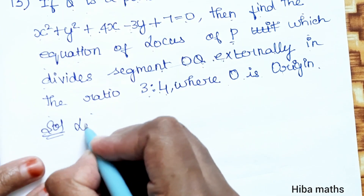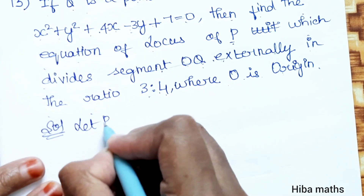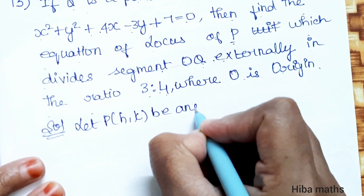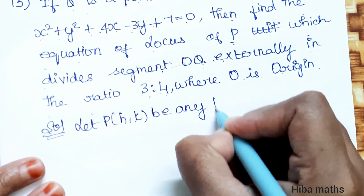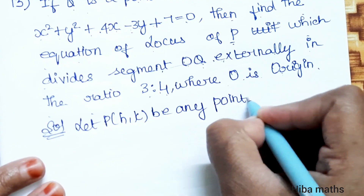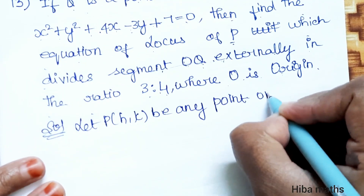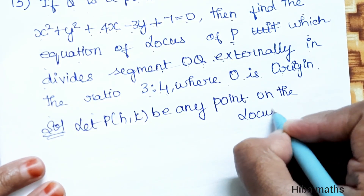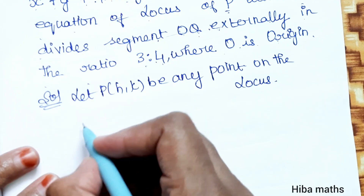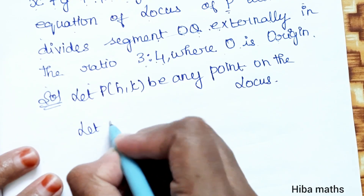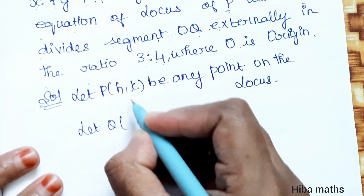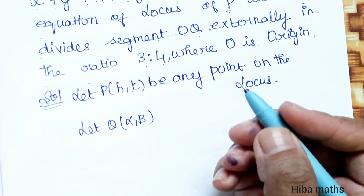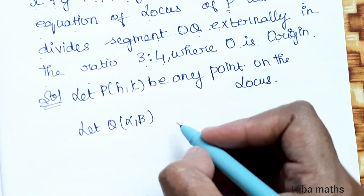Solution: Let P = (h, k) be any point on the locus. Let Q = (α, β). Here h, k are at the top x-y level, but α, β are at the locus level.